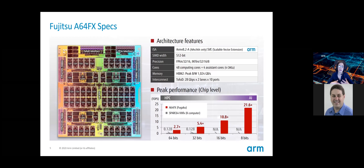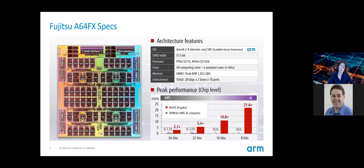Digging into what makes the A64FX special: it's a 48-core processor with four assistant cores, and it's got SVE. In addition to that, it's got two 512-bit pipelines, so it has fairly wide SVE and a wide range of precisions available — all the way down to FP16 and INT8, which are important for machine learning applications. In addition to that, it has a tremendous amount of memory bandwidth — HBM2 stacks with a peak bandwidth of one terabyte per second, which is a wonderfully high number.